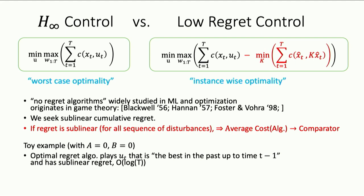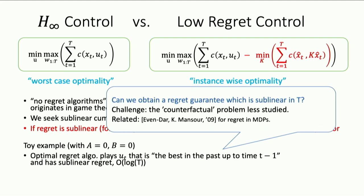In this toy example, it's not too hard to convince yourself that essentially the best strategy is to play the best thing in the past — something close to 0.3 — and this is going to be a good strategy on all sequences. It'll actually get sublinear regret. But what's subtle in our setting is that we're comparing ourselves to this counterfactual notion because we can't go back and change what we did in the past. We might want to be at a different state, but we can't because we already played the actions. So can we make this guarantee sublinear, and can we do this in a manner that gives us a practical algorithm?